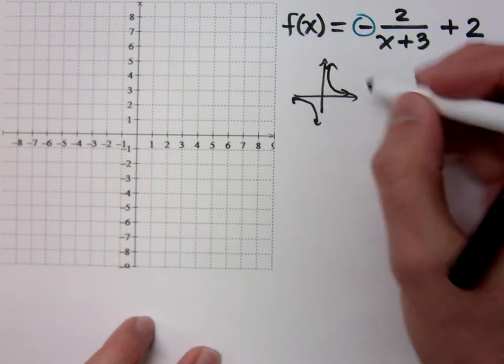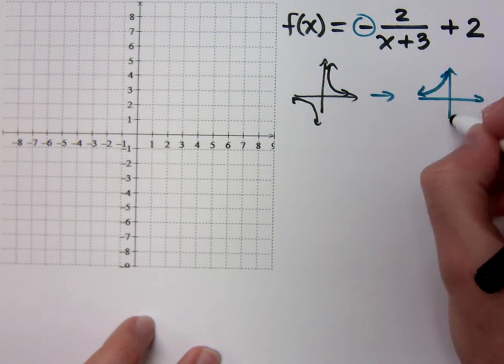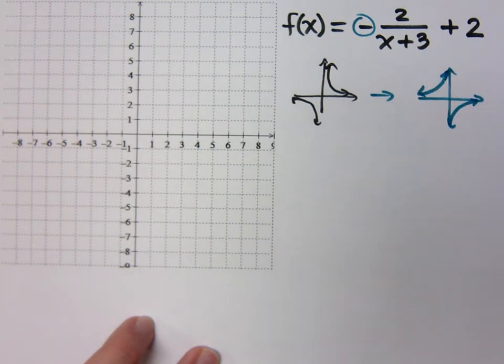The negative here tells me this guy will then become flipped upside down like this. Right? Just turning it upside down? Good. What else do you see?